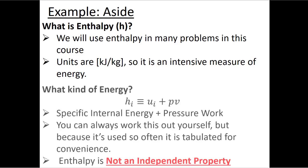Specific enthalpy h at a given state is defined as the specific internal energy plus the pressure multiplied by the specific volume: h = u + Pv. It does make sense to think of enthalpy as its own property even though it's a combination of other intensive properties. Once we fix the state we know all of these intensive properties anyway, so instead of looking each one up separately we combine them to get enthalpy. It is important to remember that enthalpy is not an independent property from specific internal energy.